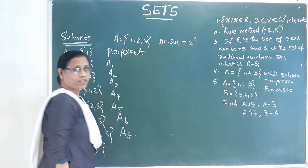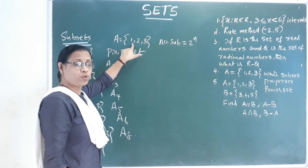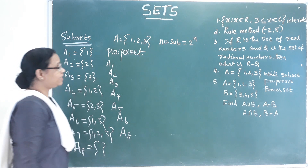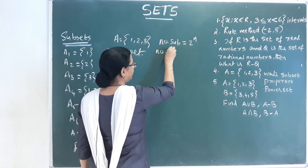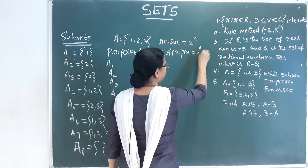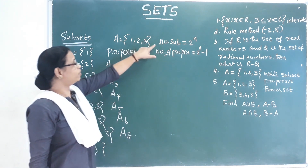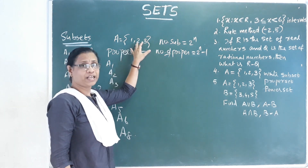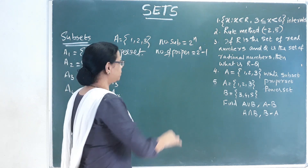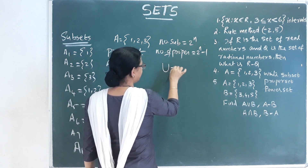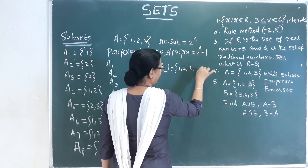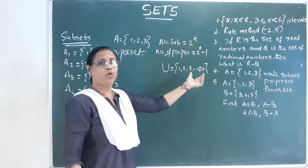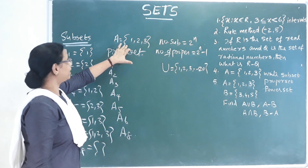We call it subset. Number of subsets = 2 raised to N. We call it: 1, 2, 3 — so 2 raised to 3, that means 8 subsets. The number of proper sets is equal to 2 raised to N minus 1, that means 7 proper sets.